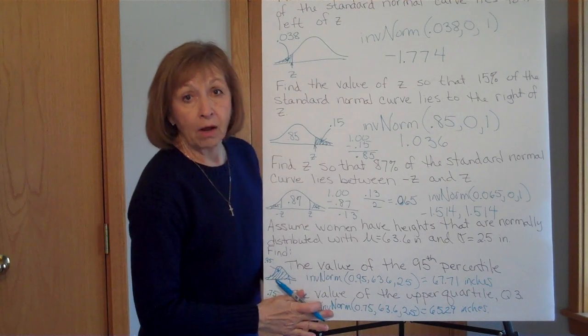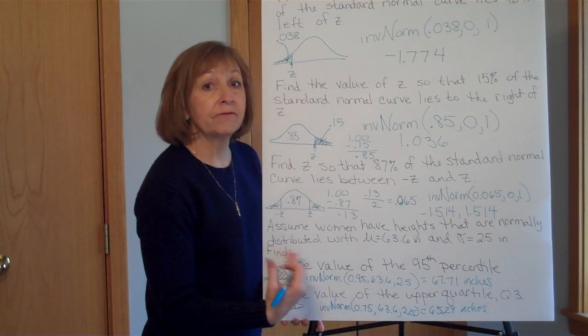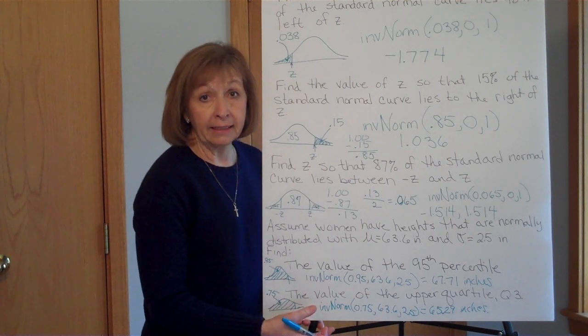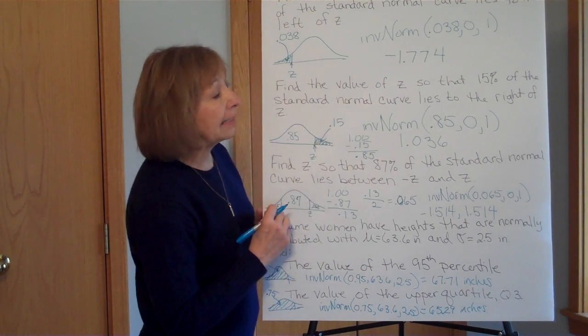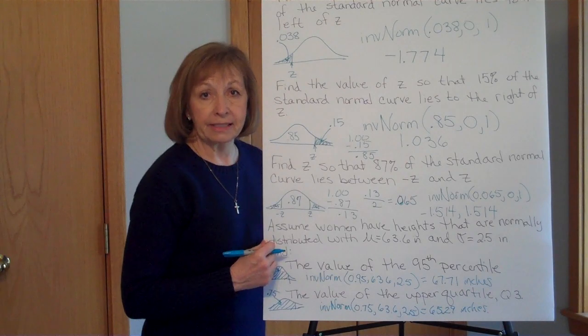So that is how you go through and find either the standardized score, the z-score, or the raw score. If you're given the percent and you want to find the raw score or z-score, or if you're given the probability and you're asked to find it.